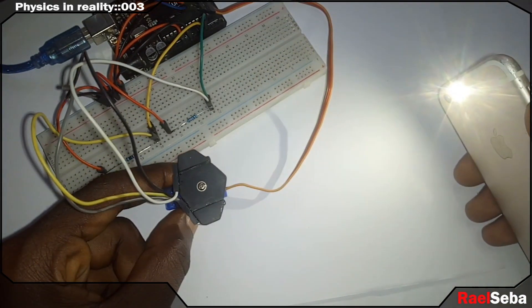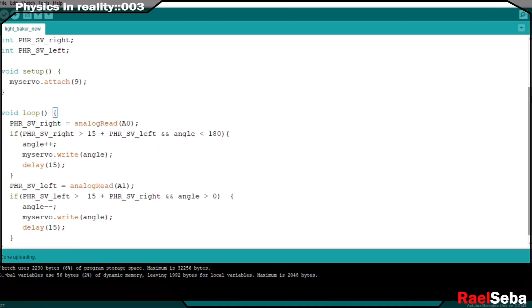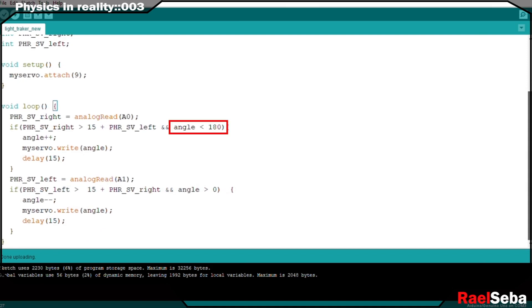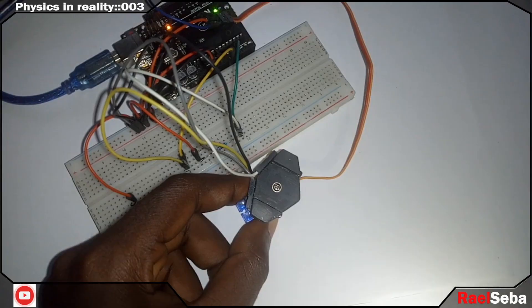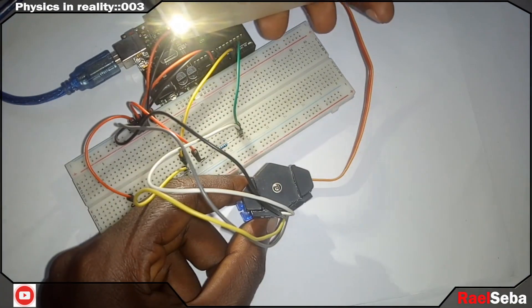But in the if statement, there is another condition. In the first one, the angle have to be less than 180. And in the second one, the angle have to be greater than 0 for the execution to take place, which makes the tracker to move only between angle of 0 degree to 180.